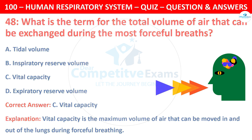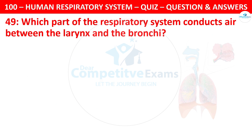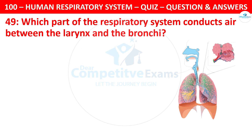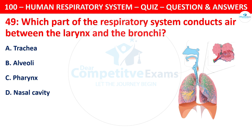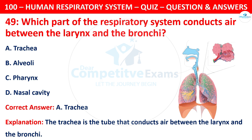Question 49: Which part of the respiratory system conducts air between the larynx and the bronchi? Your options are: trachea, alveoli, pharynx, or nasal cavity. The correct answer is A — trachea. The trachea is the tube that conducts air between the larynx and the bronchi.